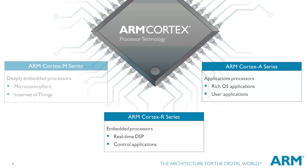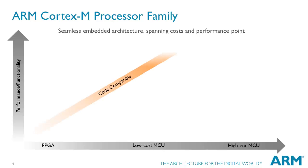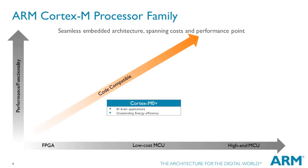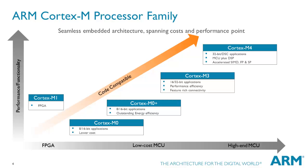These set of videos focus on the Cortex-M family. The Cortex-M family comprises the ultra-low-power Cortex-M0+, the low-power Cortex-M0, the general-purpose Cortex-M3, and the Cortex-M4 for digital signal control applications. Finally, the Cortex-M1 processor supports FPGA implementations.